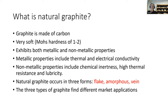So let's have a look at graphite specifically. What is it? It's made of carbon. It's very soft — it has a hardness of one to two. We know it's really slippery if you touch it, it rubs off on the fingers. It exhibits both metallic and non-metallic properties. The metallic properties include thermal and electrical conductivity, whereas the non-metallic properties include chemical inertness and high thermal resistance.